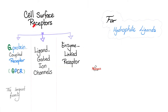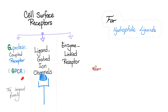Or the receptor could be waiting on the outside, on the cell surface, if the hormone or ligand is water-soluble. These include G-protein coupled receptors, ligand-gated ion channels, and enzyme-linked receptors. What does ligand mean? It means a chemical that binds to the receptor — like a key in a lock, like a truck in a dock.